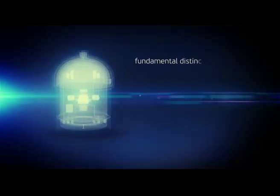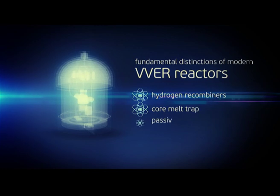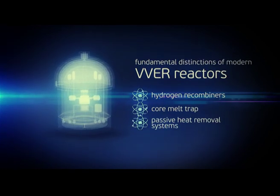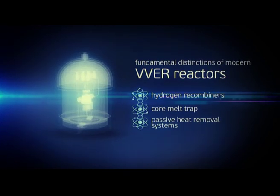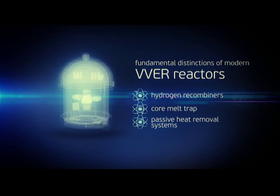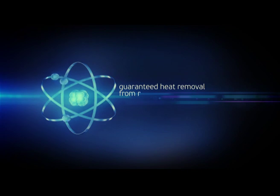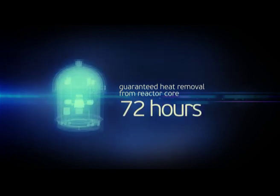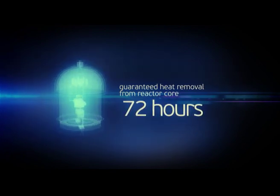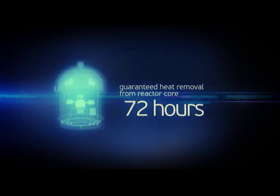Special engineering features such as hydrogen recombiners, core melt trap and passive heat removal systems are fundamental distinctions of modern VVER power units. The combination of active and passive safety systems allows maintaining guaranteed heat removal from the reactor core during 72 hours in case of a pipeline break. This time is sufficient to do required repairs.